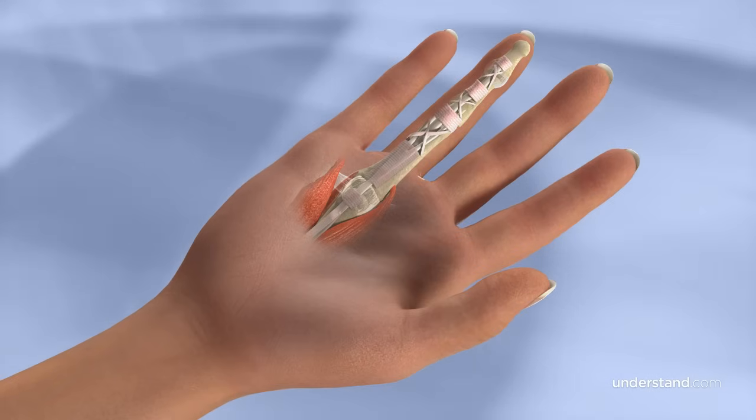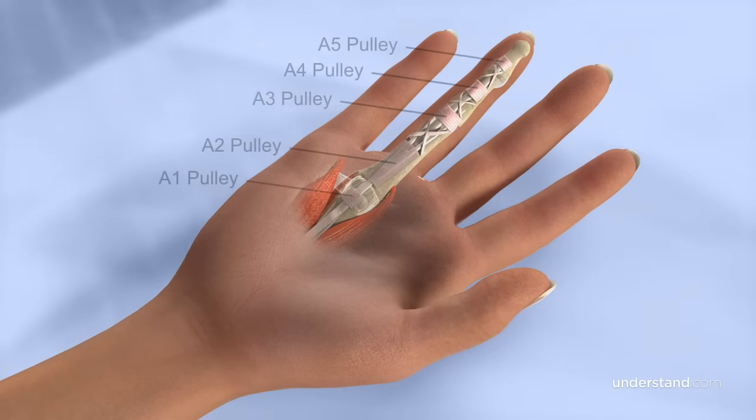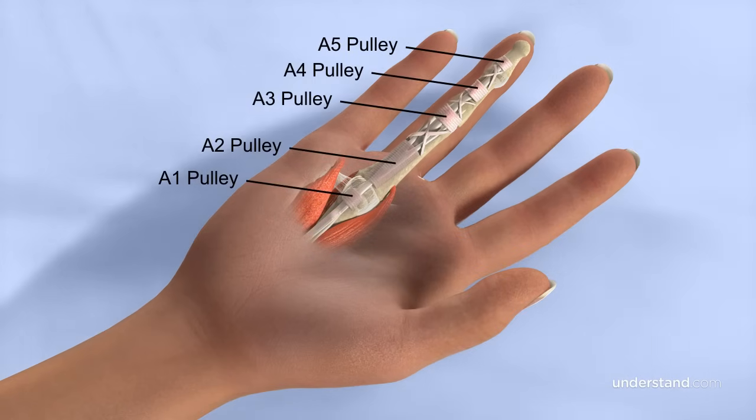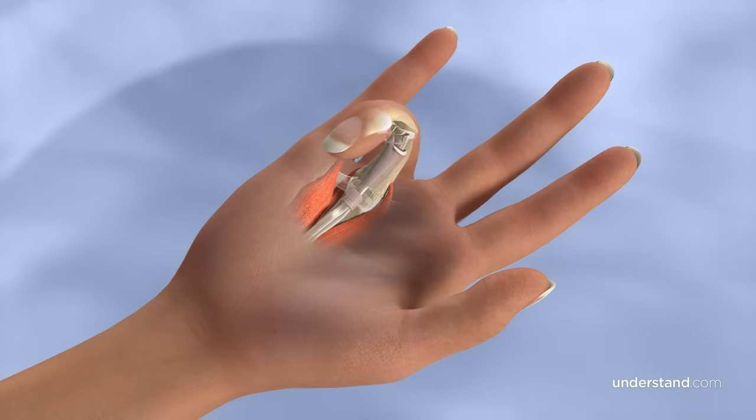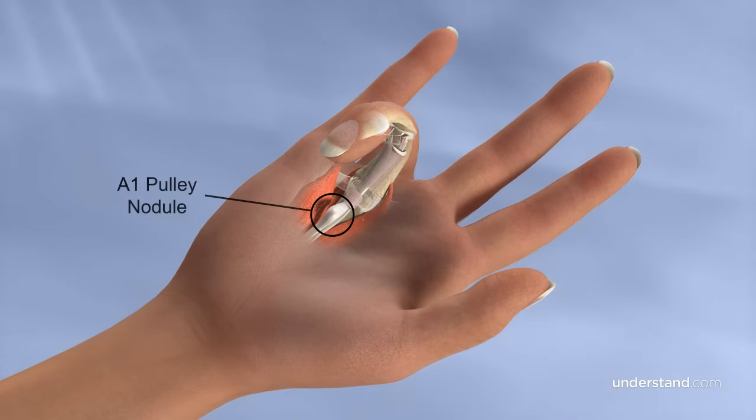Thickenings of the sheath in five areas are referred to as annular pulleys, which are numbered A1 through A5. Trigger finger results from a widening of the flexor tendons from forceful gripping or finger flexion that causes bunching of the tendon fibers at the A1 tendon sheath pulley.